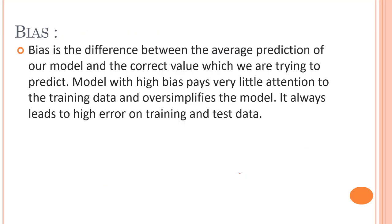To make predictions, our model will analyze our data and find patterns in it. Using these patterns, we can make generalizations about certain instances in our data. Our model after training learns these patterns and applies them to the test set to predict values. Bias is the difference between our actual and predicted values. Bias is the simple assumptions that our model makes about our data to be able to predict new data.